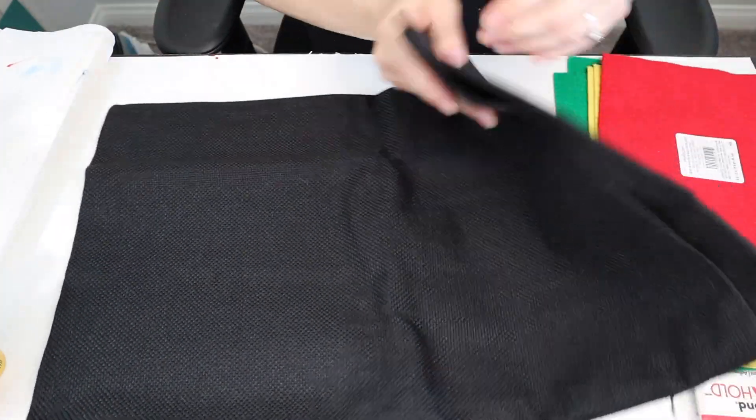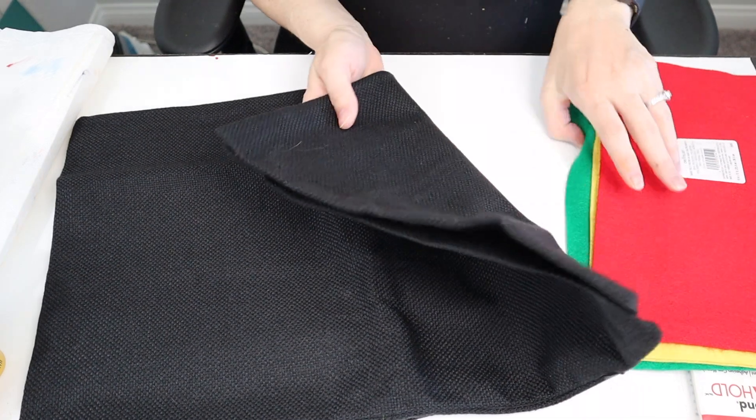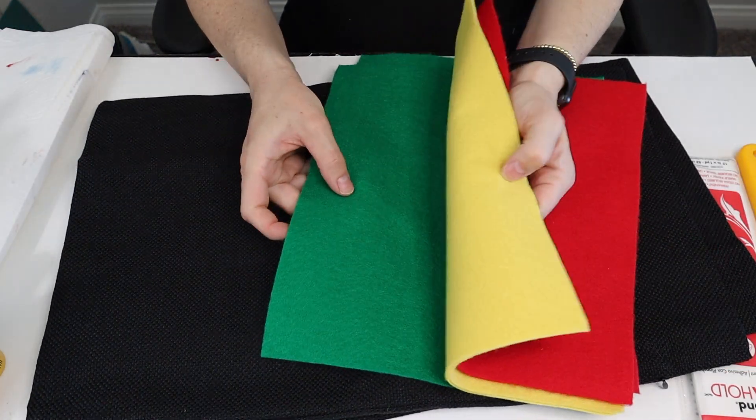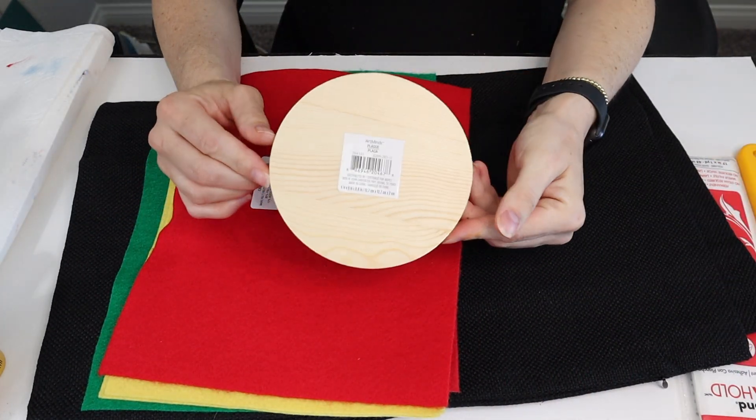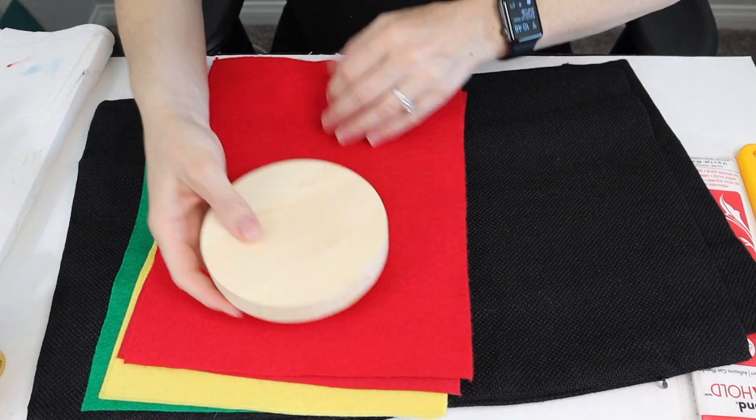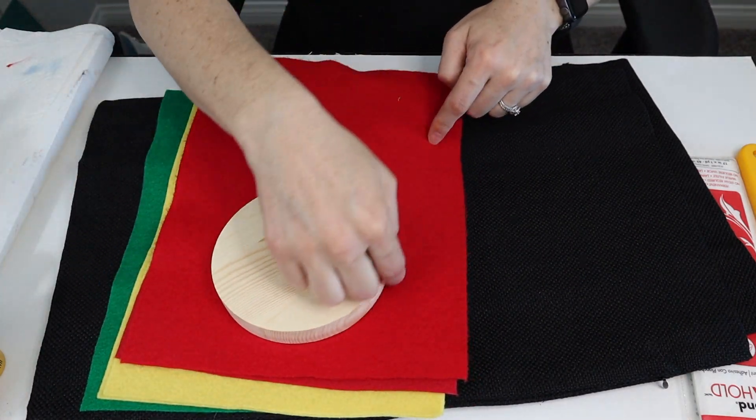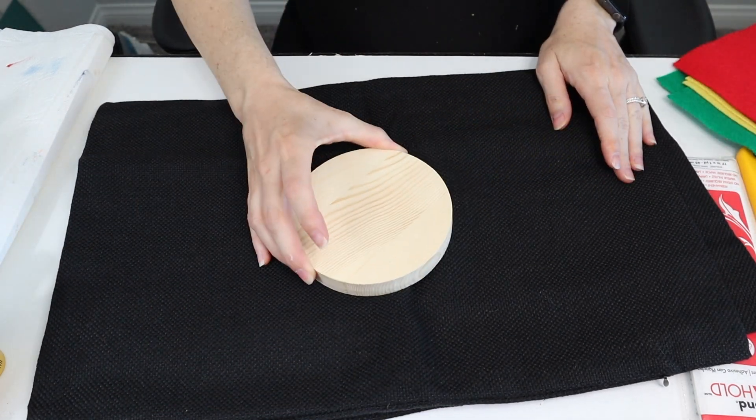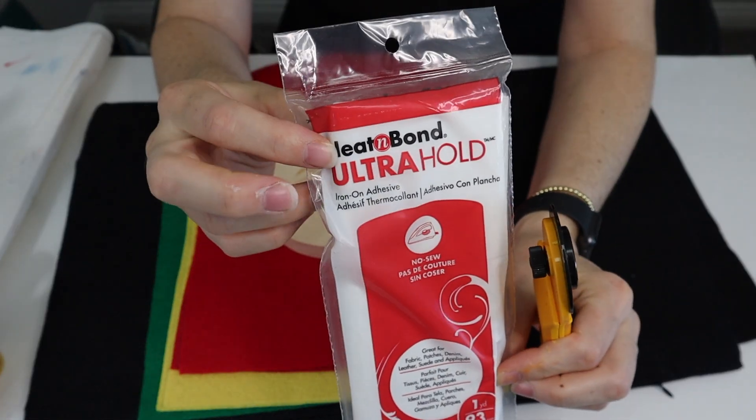First up is our stoplight pillows. I got two sets of these black simple throw pillow covers, and then I got two red, two yellow, two green pieces of felt from Michaels, as well as this round disc also from Michaels. It was like 99 cents. I'm just going to use it to trace a circle. It is about five and a half inches, so this will fit perfectly on the pillow here.